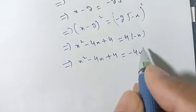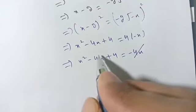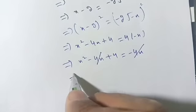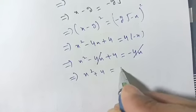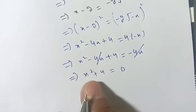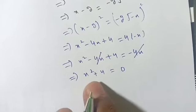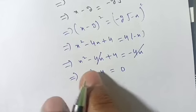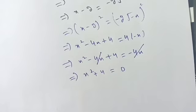Now we cancel 4x from both sides, and the remaining part is x squared plus 4 is equal to 0. This is the reduced form of the given equation.